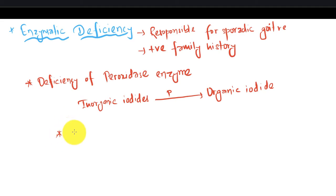Deficiency of peroxidase enzyme causes Pendred syndrome, which is the triad of deafness, goiter, and mutism.